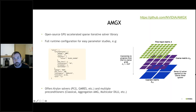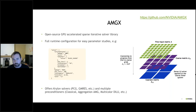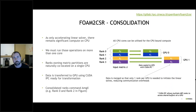AMGX is essentially a sparse iterative solver library that is fully GPU-accelerated. Different from some linear solver libraries with multi-grid preconditioning, it has the full process GPU-resident — the setup phase is also done on the GPU. It's configurable at runtime via configuration files, enabling fast parameter studies without recompilation. It offers traditional solvers including conjugate gradient and GMRES, with preconditioners like multi-grid, multicolor DILU, and block Jacobi.